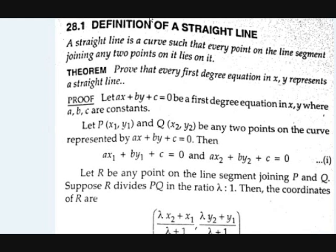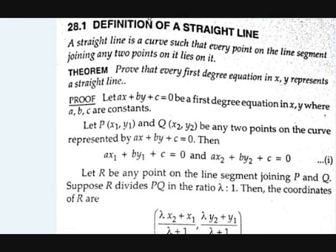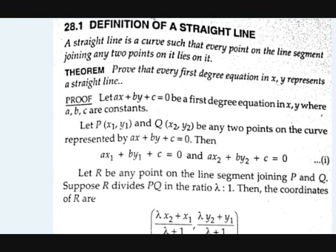Now first, the definition of a straight line. What is a straight line? A straight line means a curve such that every point on the line segment joining any two points on it lies on it. This line is pretty confusing. Straight line means a curve — you may ask, it is not a curve, it is straight. It is according to the definition.